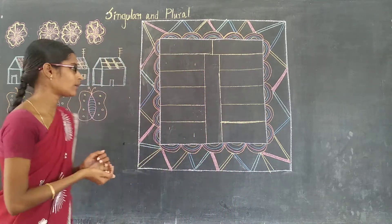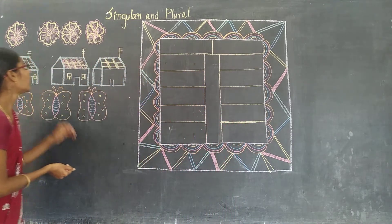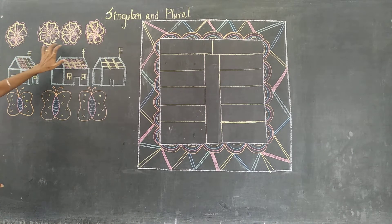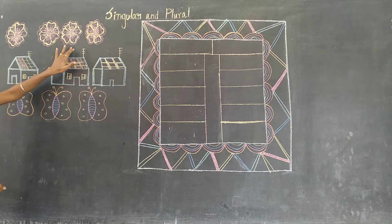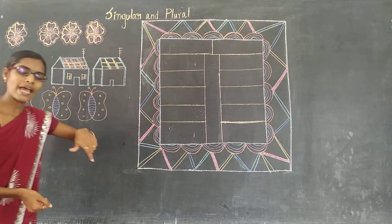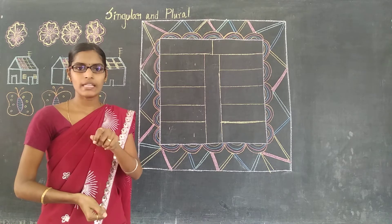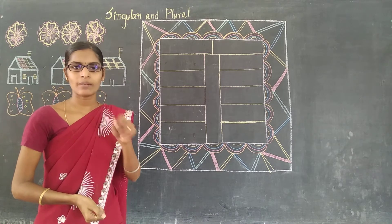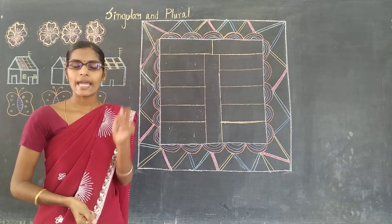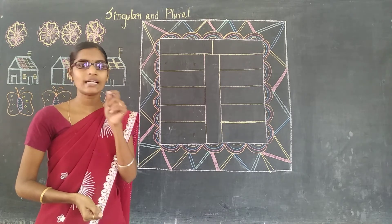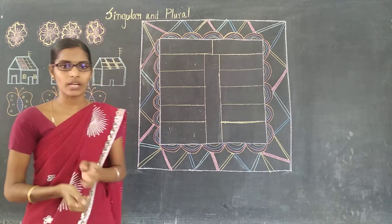Just look at the diagram shown here — only one flower, and three flowers. This is one and this is many. In Class 1, we studied this as one and many, not singular and plural. In Class 2, they are given the correct topic, that is singular and plural.